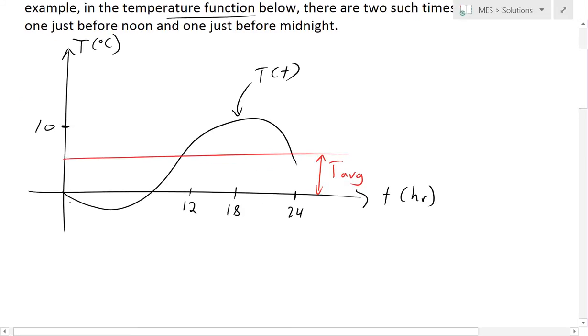For example, if you look at this, this is the temperature throughout the day. This is at midnight, this is at noon. As you can see, if this is the average value in red right here, so just before noon and just before midnight, in this case, the temperature is equal to the average temperature across the whole day.